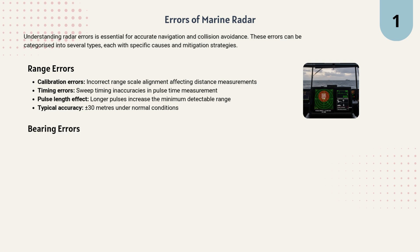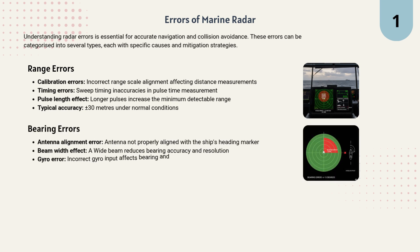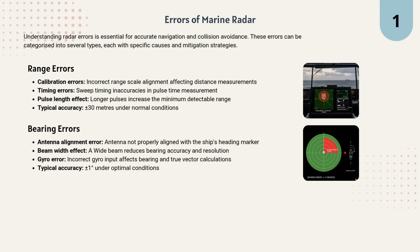Next, bearing errors. If the antenna isn't aligned properly with the ship's heading marker, or if the beam is too wide, accuracy and resolution go down. Gyro errors also play a role, because incorrect gyro input affects both bearing and true vector calculations. In good conditions, bearing accuracy is usually within plus or minus 1 degree.